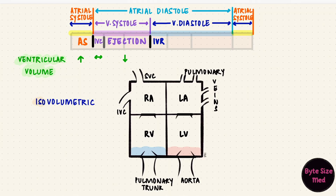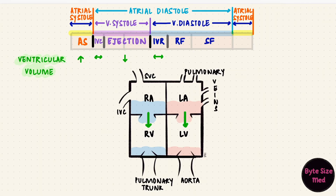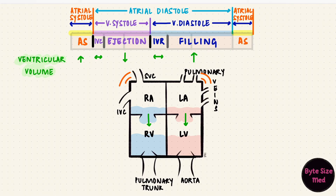The ventricles relax with all the valves closed. This is isovolumetric relaxation — just like isovolumetric contraction, the volume doesn't change because all the valves are closed. Once the atrioventricular valves open, the ventricles start filling: first rapidly and then slow filling. The volume rises, and most of the filling happens during this stage. The last bit of filling comes from atrial contraction during atrial systole. So now we're back where we started and the whole thing repeats.